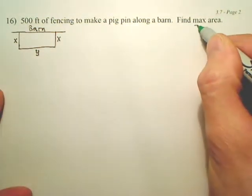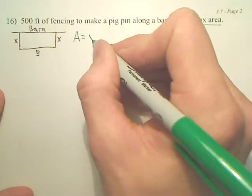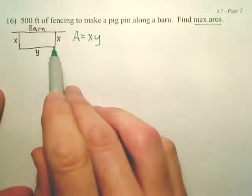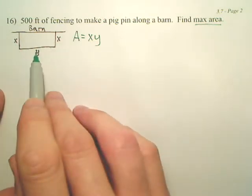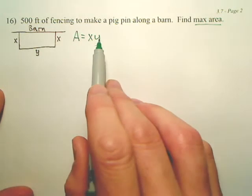So what we're trying to find, what we're trying to maximize is area. Area is going to be x times y. By the way, here's the barn. Here's a rectangular pin. This is x, this is y. Area would be x times y. You're maximizing this.